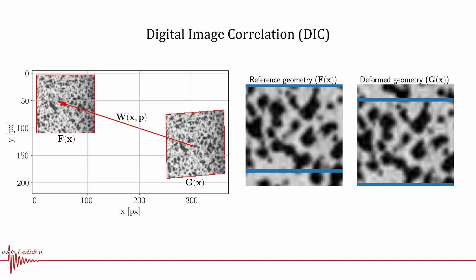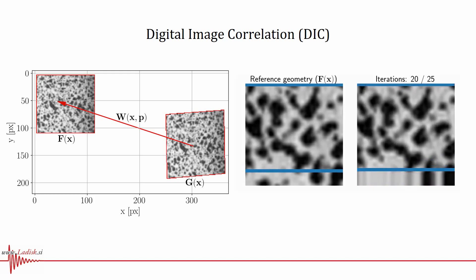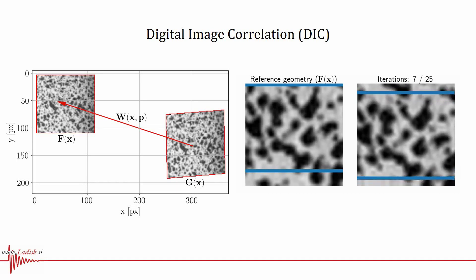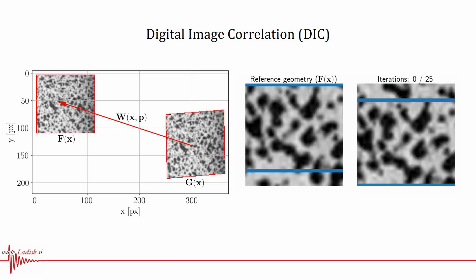Digital image correlation is perhaps the method most commonly associated with image-based vibration measurements. It uses an iterative optimization process to determine the geometrical transformation that best aligns the image of a displaced object with an initial image of the geometry. You can recognize the digital image correlation method by the high contrast pattern that is applied to the object surface to facilitate the optimization process.